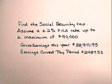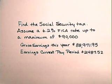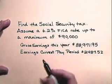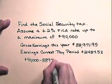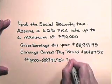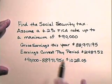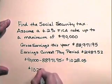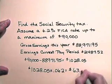Now let's find the Social Security tax for gross earnings of $88,971.95 so far this year, and the earnings for the current pay period are $2,487.52. We assume a 6.2% FICA rate up to a maximum earnings of $90,000 — FICA taxes are paid only on the first $90,000 earnings each year. So we find the difference between $90,000 and the gross earnings this year, and we find that this employee has $1,028.05 in FICA taxable earnings. The Social Security tax is $1,028.05 times 6.2%, which is $63.74.